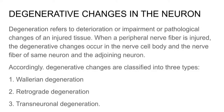Degenerative changes in the neuron: degeneration refers to deterioration, impairment, or pathological changes of an injured tissue. When a peripheral nerve fiber is injured, the degenerative changes occur in the nerve cell body and the nerve fibers of the same neuron and the adjoining neuron. Degenerative changes are classified into three types: Wallerian degeneration, retrograde degeneration, and transneuronal degeneration.